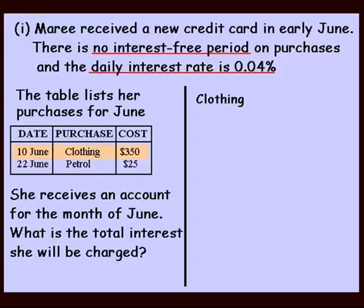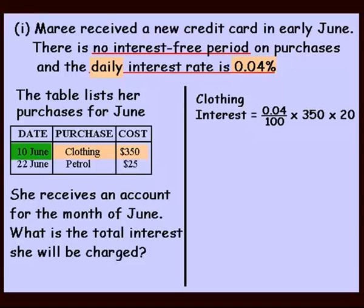Firstly, the clothing. We're asked for the interest, so let's work that out. It's 0.04% per day, which we write as 0.04 over 100, because it's a percent. We multiply by $350 — that was the cost of the clothing. Now, that's her daily interest rate. She bought it on the 10th of June. There are 30 days in June, so she's actually paying interest for 20 of the days remaining in June — we don't count the initial 10 days. So we multiply our daily interest by 20 days, and it works out to be $2.80.